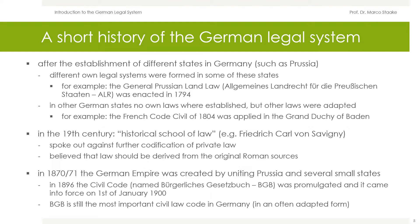However, in 1870–1871, the German Empire was created by uniting several small states. After long preparatory work, the Civil Code was promulgated in 1896 and came into force on the 1st of January 1900. It was named Bürgerliches Gesetzbuch, in short BGB. This code is still in force in Germany today in an often adapted form.